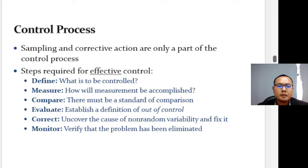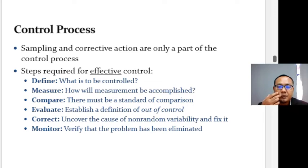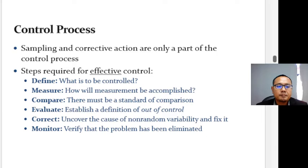Second, measure — determine how measurement will be accomplished. Only characteristics that can be counted or measured are candidates for control. Third, compare — there must be a standard of comparison used to evaluate the measurement. This relates to the level of quality being sought.